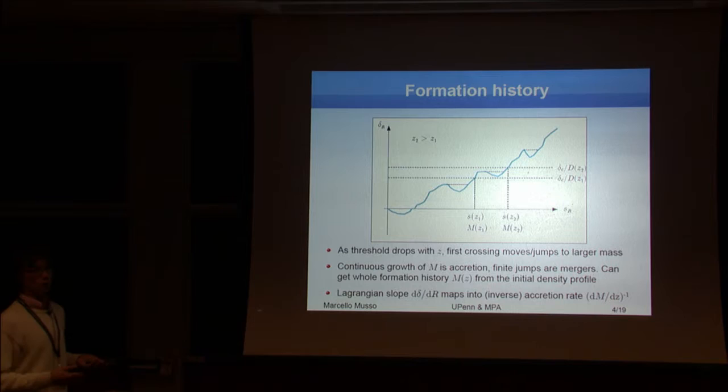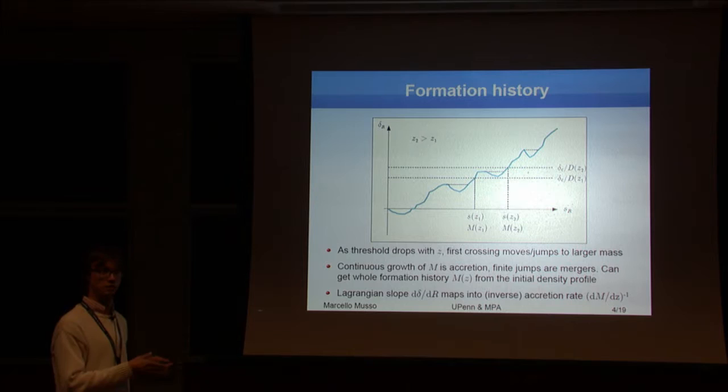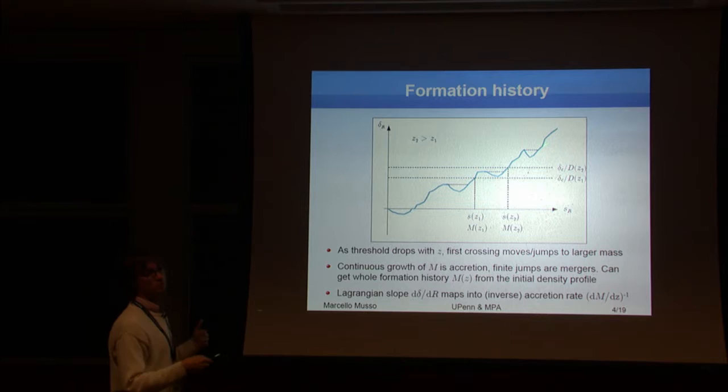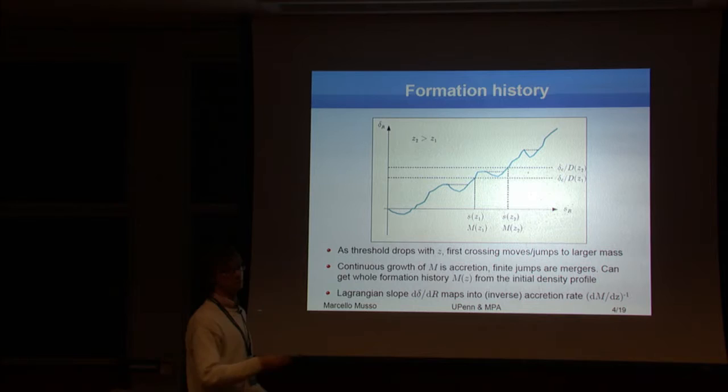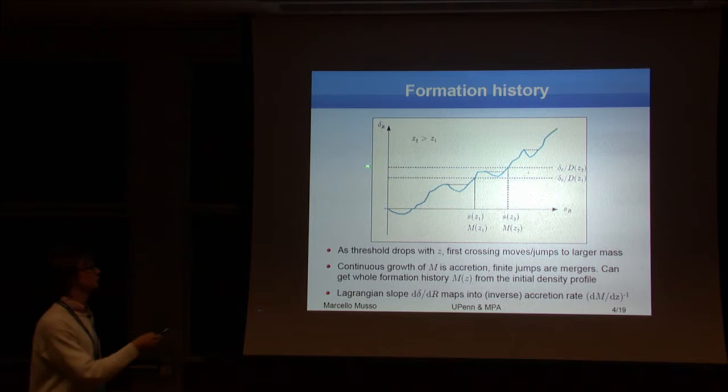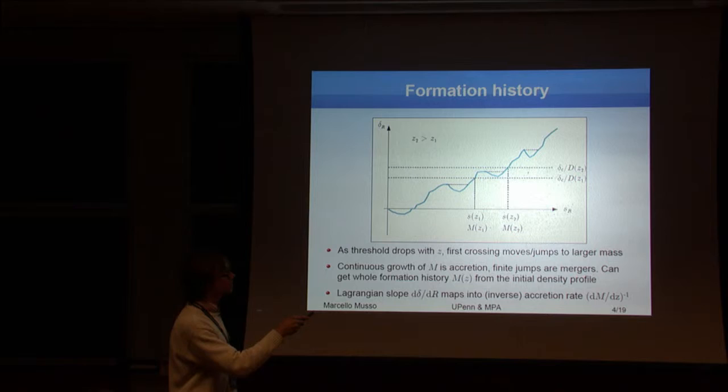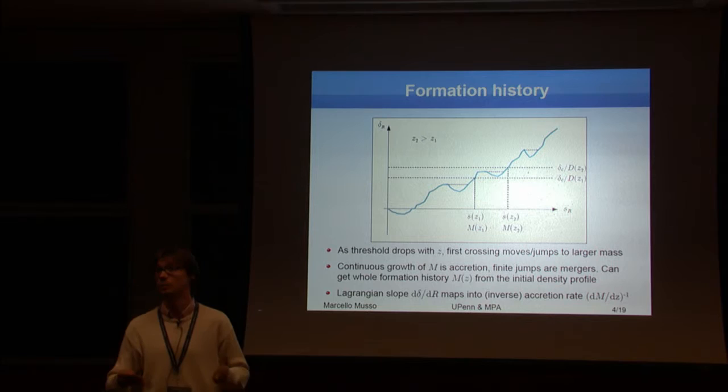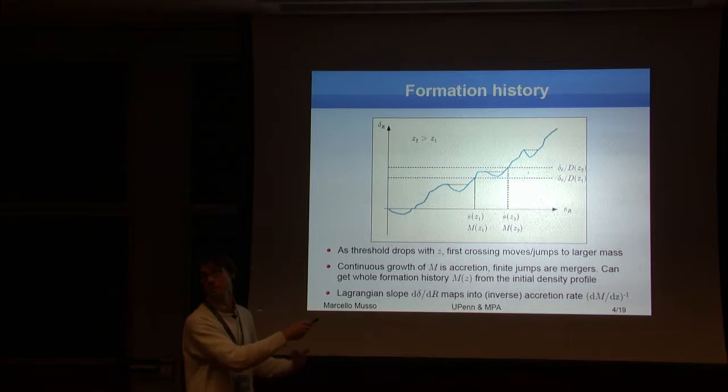Constraining the derivative at the crossing, which means up-crossing, simply requesting that you're crossing the barrier upwards, guarantees that you have been below threshold at larger scales. So this is, at least for large masses, a very good approximation of the first crossing distribution. You can forget about, in the old jargon, the cloud-in-cloud problem, and just talk about up-crossing. So two variables are enough on most of the scales.